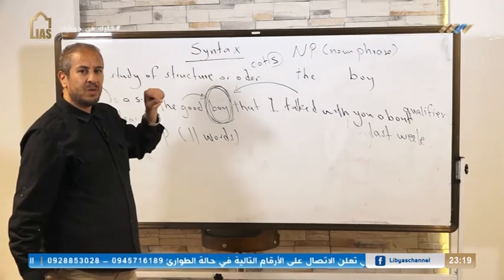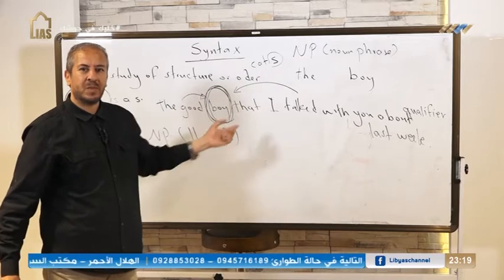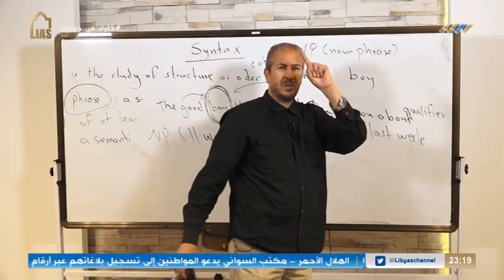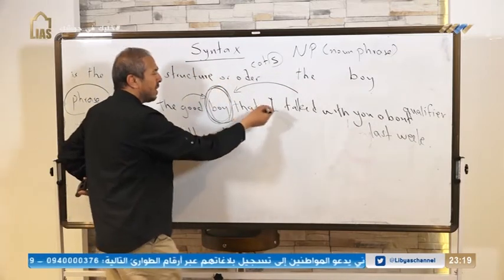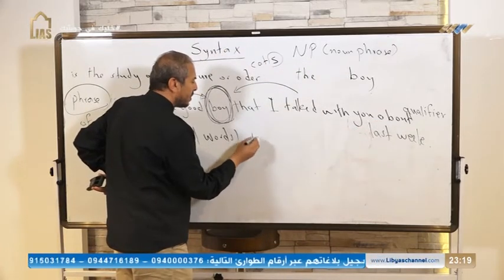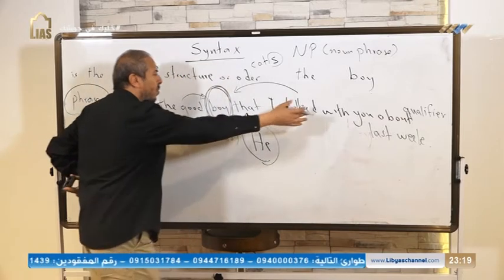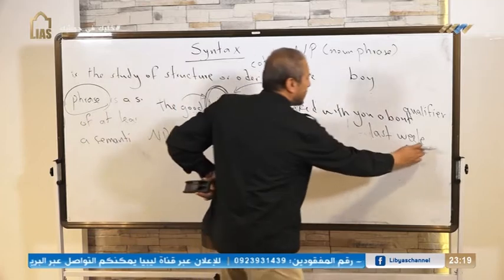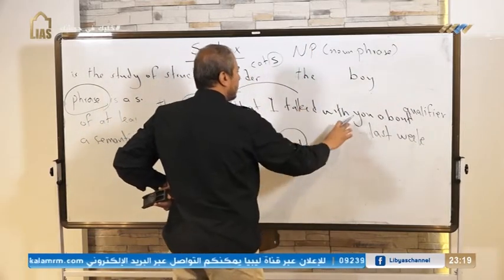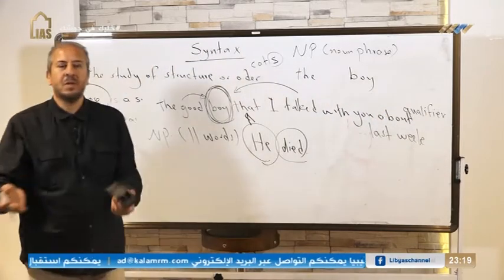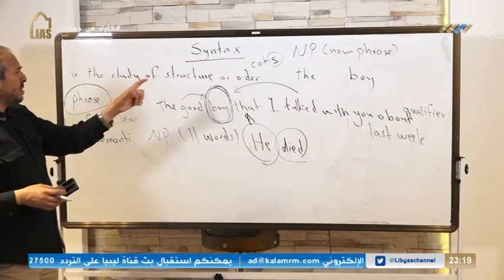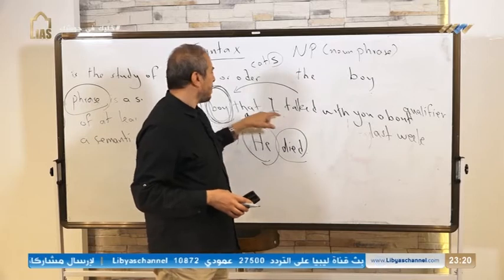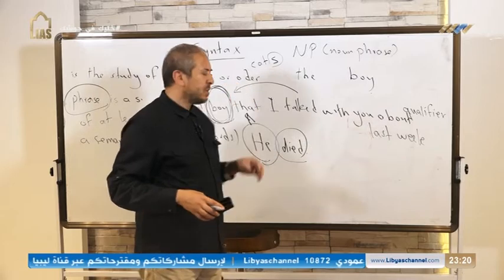If you want to make this into a sentence, you simply add a verb, because the noun phrase has no verb. For example: 'The good boy that I talked with you about last week died.' The entire noun phrase functions as the subject, which can be replaced by the single pronoun 'he.' So 'he' represents the whole phrase.